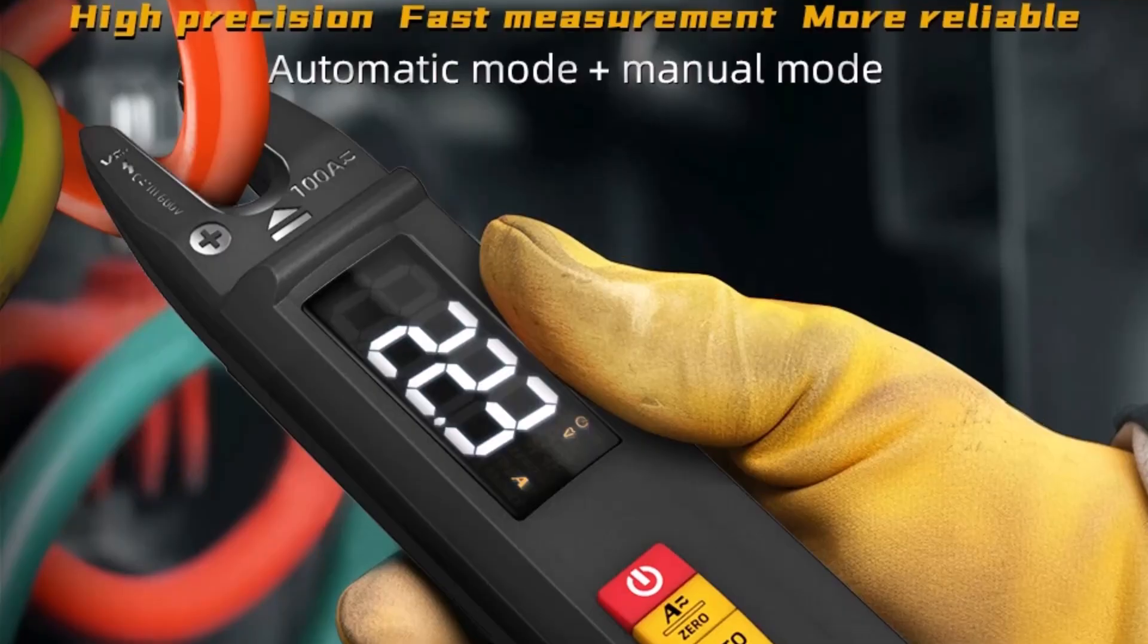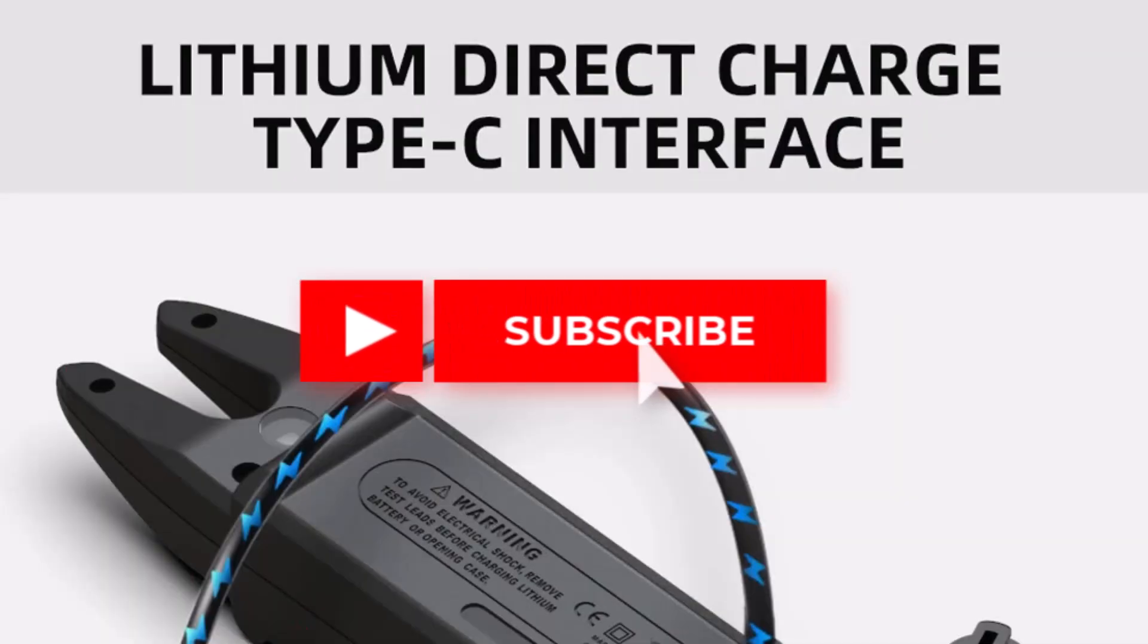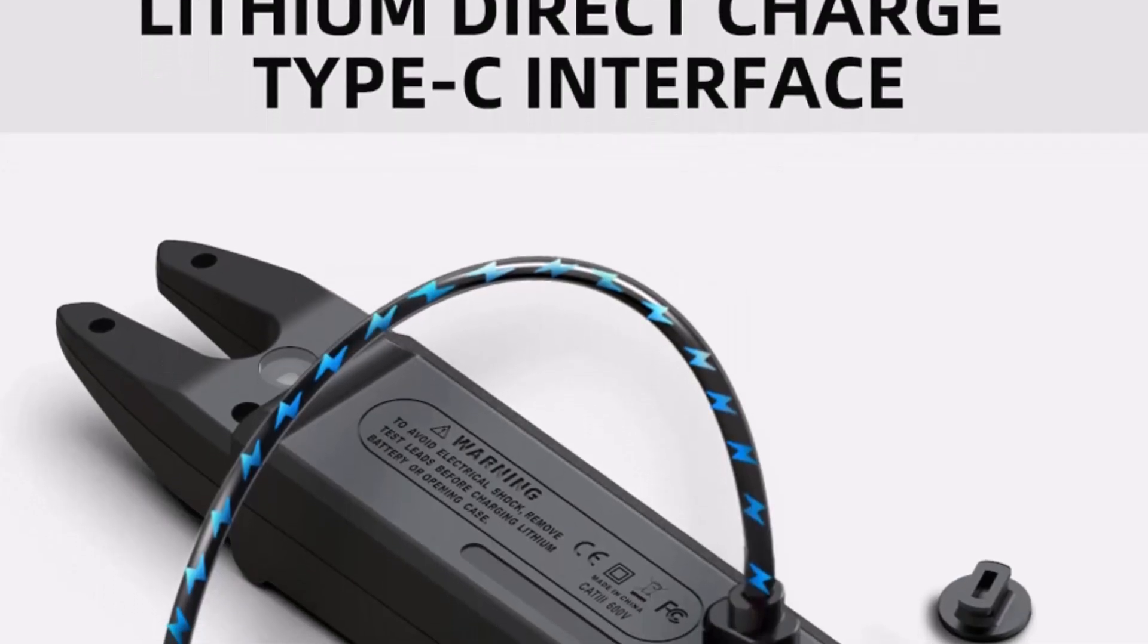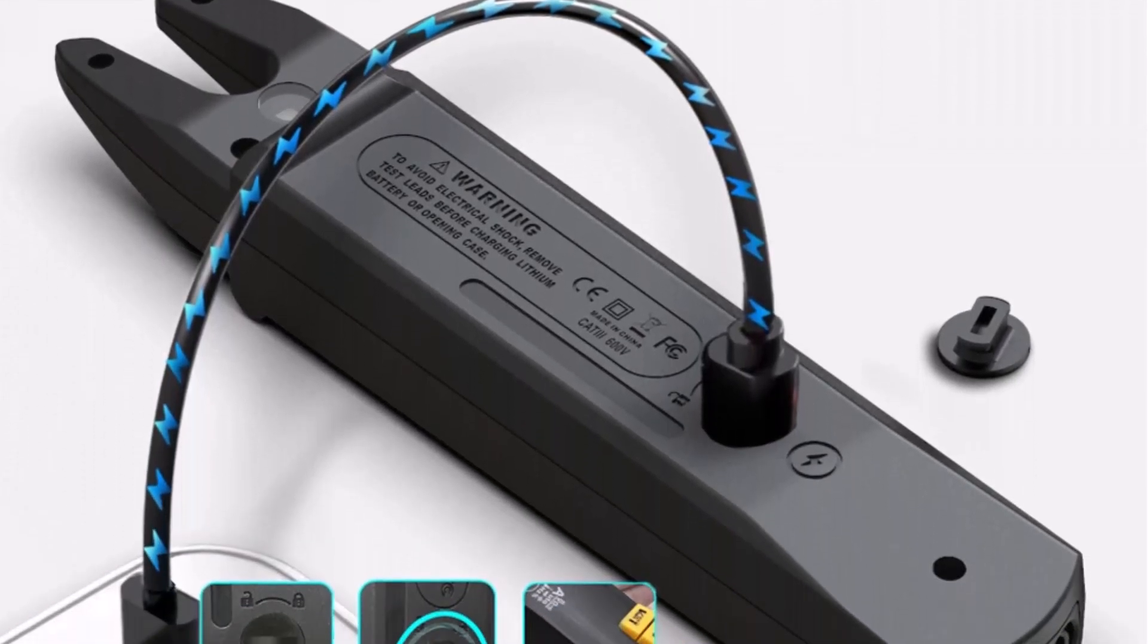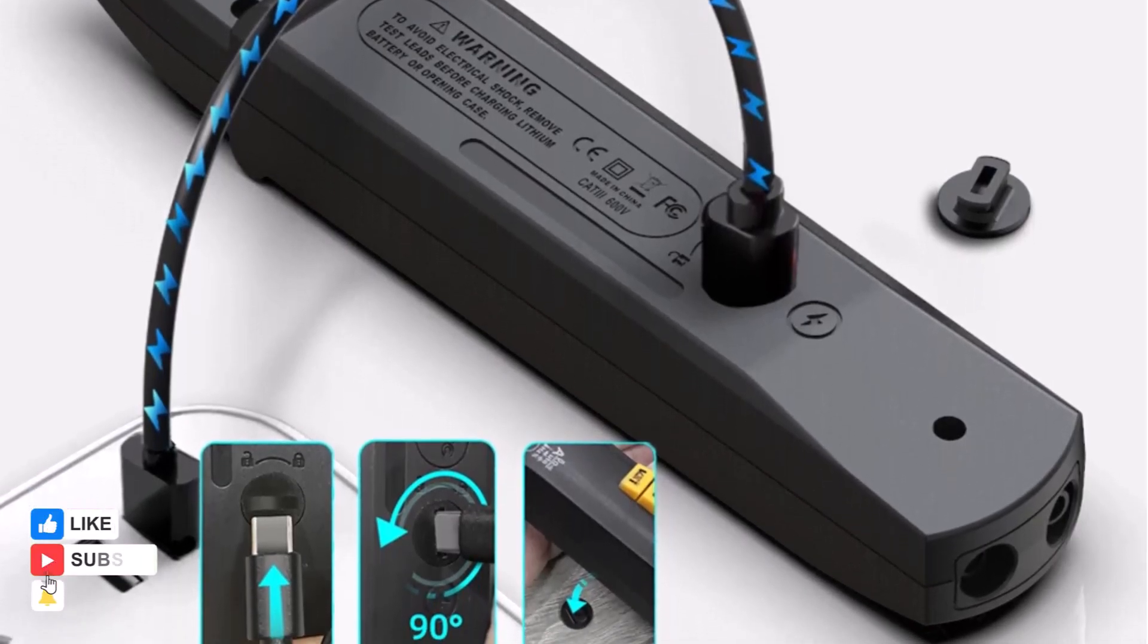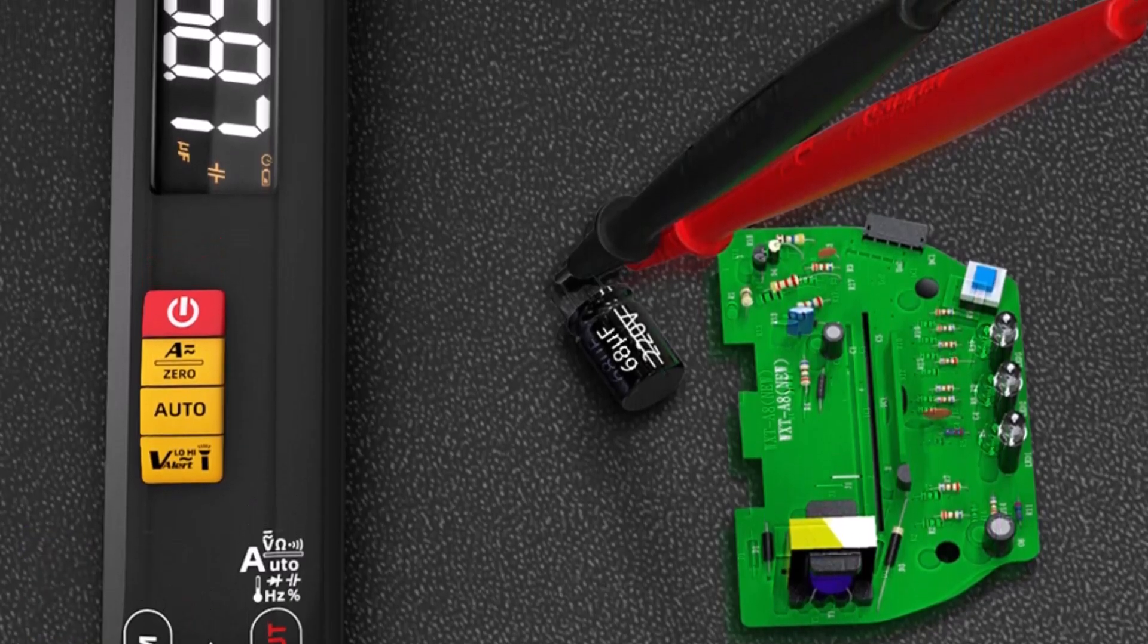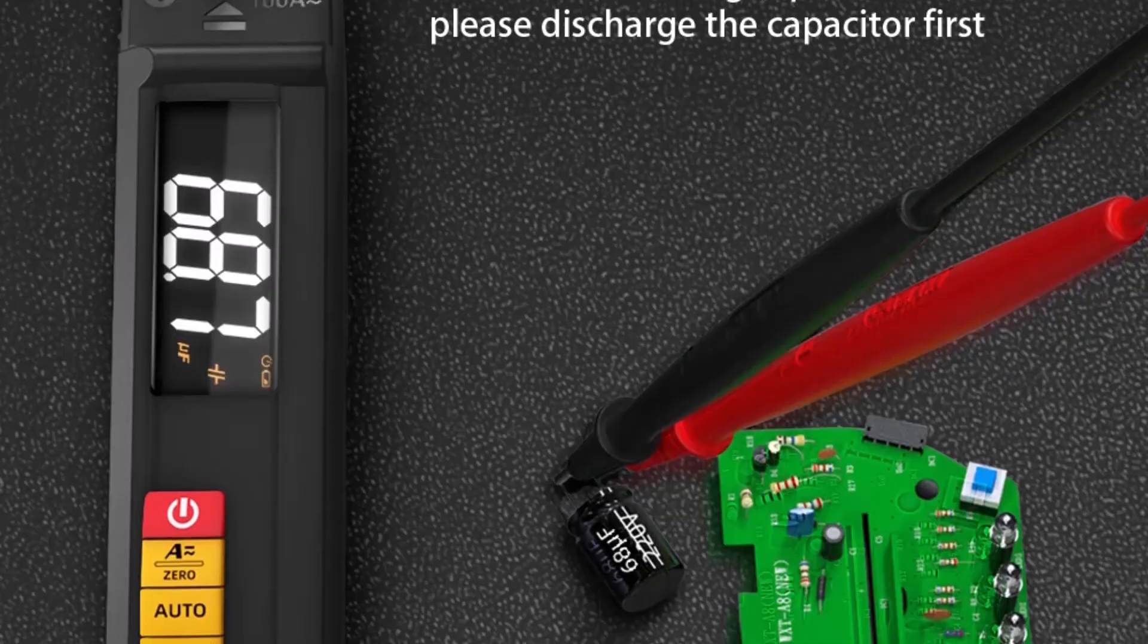With its ability to measure up to 100A and a maximum display of 6,000 counts, it delivers precise readings for a wide range of electrical tasks. The EBTN color HD LCD screen ensures clear visibility even in low light conditions.